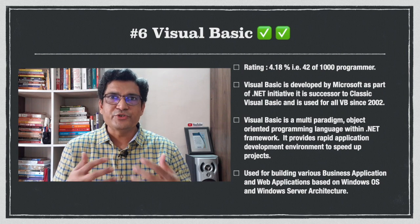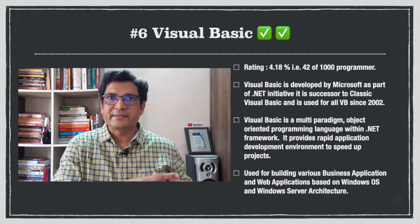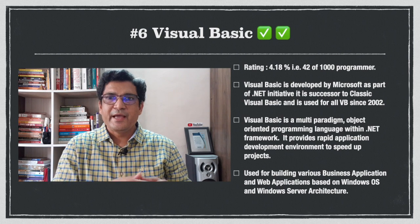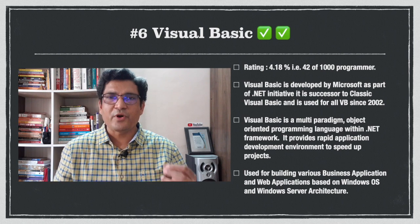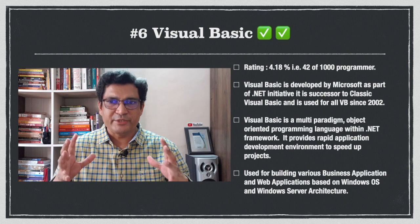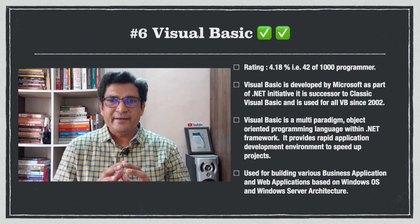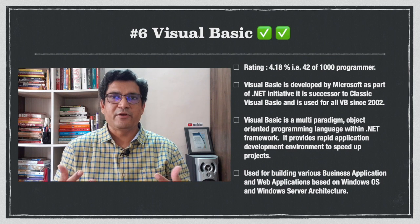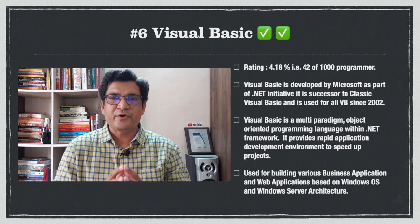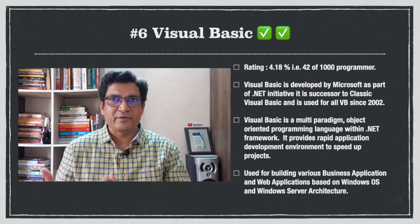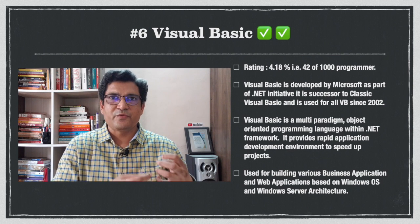At number 6 is Visual Basic .NET, which replaced Classic Visual Basic around 2002. Visual Basic .NET was developed by Microsoft as part of their .NET initiative and is the successor to Classic Visual Basic. In my company, we migrated all our code from Classic Visual Basic to Visual Basic .NET. It is a multi-paradigm object-oriented programming language within the .NET framework, providing rapid application development for building business applications on Windows OS, Windows Server, and IIS for web applications.